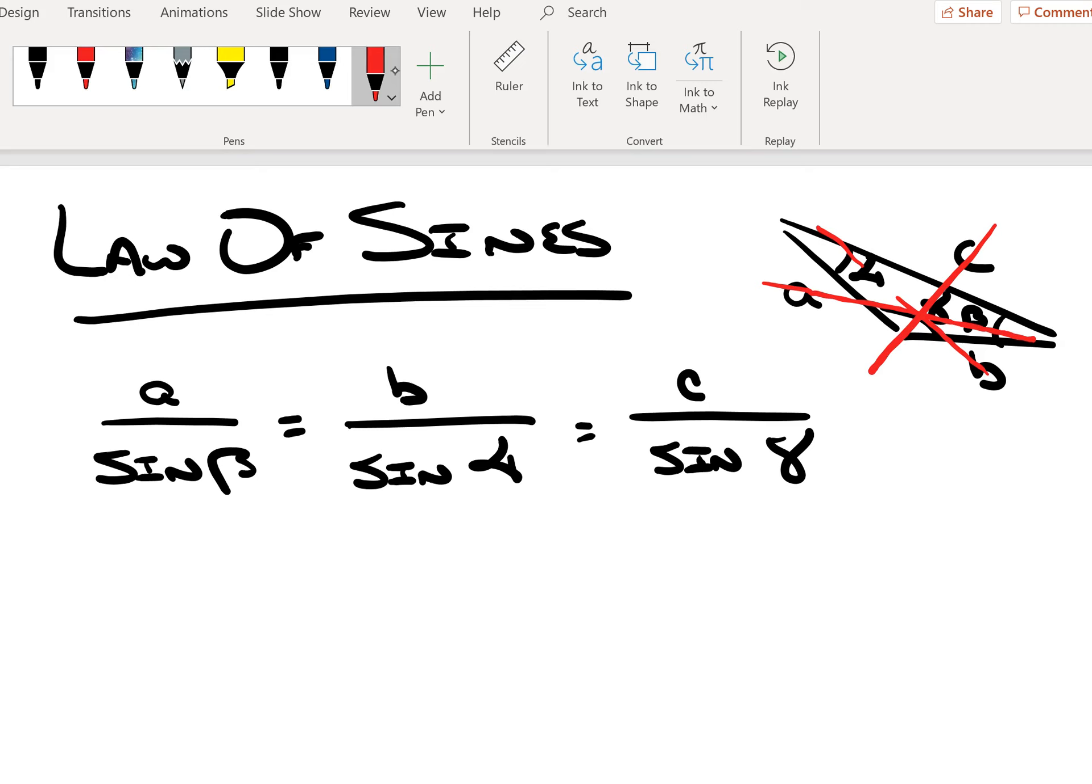We see here that we have three equivalent relationships: side A divided by the sine of beta is the same as side B divided by the sine of alpha, which is the same as side C divided by the sine of gamma.